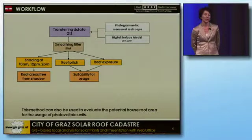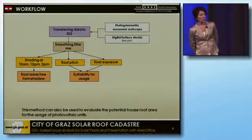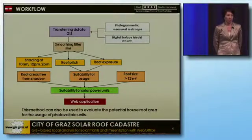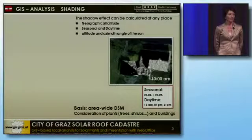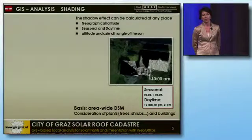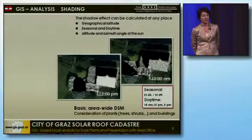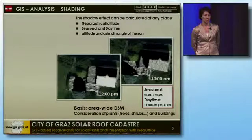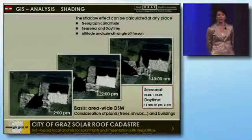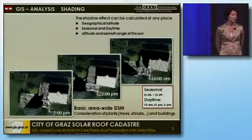The results are presented with the Syncfusion web client. First, we determined the shading on the basis of the digital surface model. The shadow was calculated on the 21st of September, which is similar to the 21st of March, at 10 a.m., 12 p.m., and 2 p.m. The results show those roof areas which are free from shadow, as you can see on the slide.